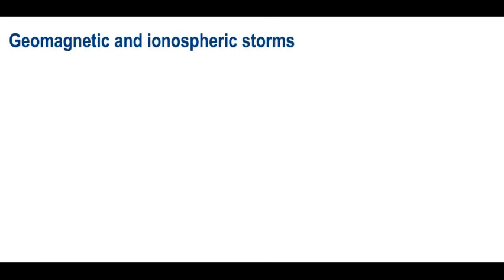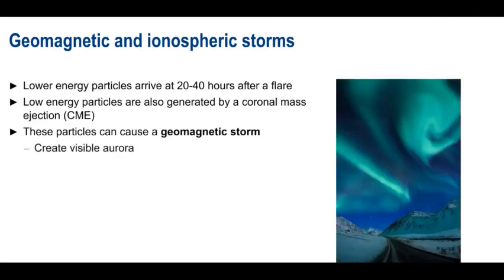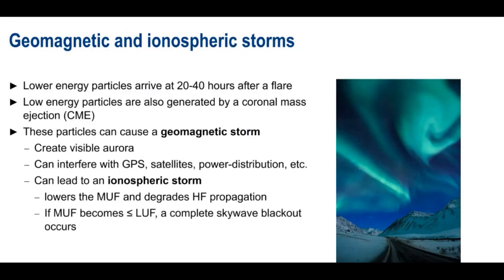Geomagnetic storms are caused by lower-energy particles arriving at the Earth. This occurs 20 to 40 hours after a solar flare. These particles can also be generated during something called a coronal mass ejection or CME, which can occur independently of a solar flare. In either case, these particles can cause geomagnetic storms. Geomagnetic storms produce visible aurora, but they can also interfere with GPS signals, satellites in general, terrestrial power distribution networks, etc. Geomagnetic storms don't directly interfere with HF propagation, but they can create ionospheric storms. Ionospheric storms lower the maximum usable frequency and do degrade HF propagation. And, as mentioned earlier, if the MUF falls below the LUF, an ionospheric storm can create a complete HF skywave blackout. One final note. It is possible to have a geomagnetic storm without an ionospheric storm, but the converse is not true. All ionospheric storms start out as geomagnetic storms.